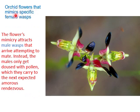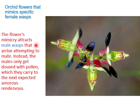Orchid flowers that mimic specific female wasps attract male wasps that arrive attempting to mate. Instead, males only get dosed with pollen, because they are not real female wasps. They then carry the pollen to the next flower they visit in another attempted mating, thus enabling pollination.